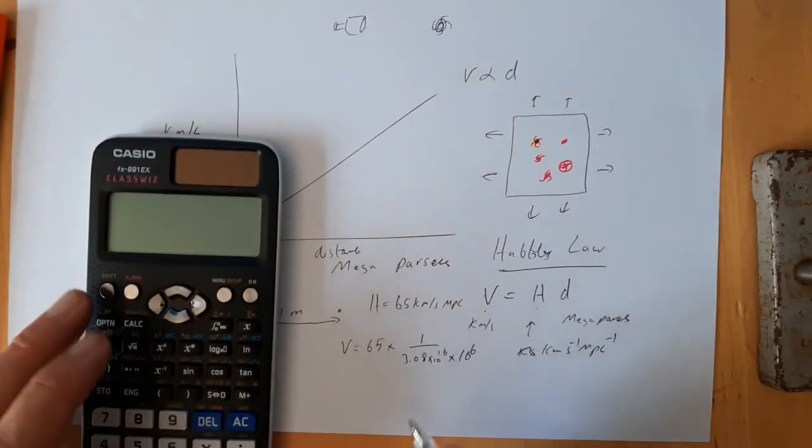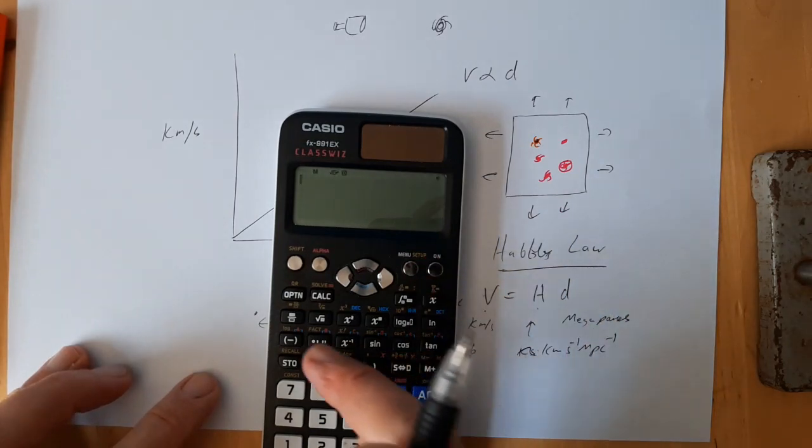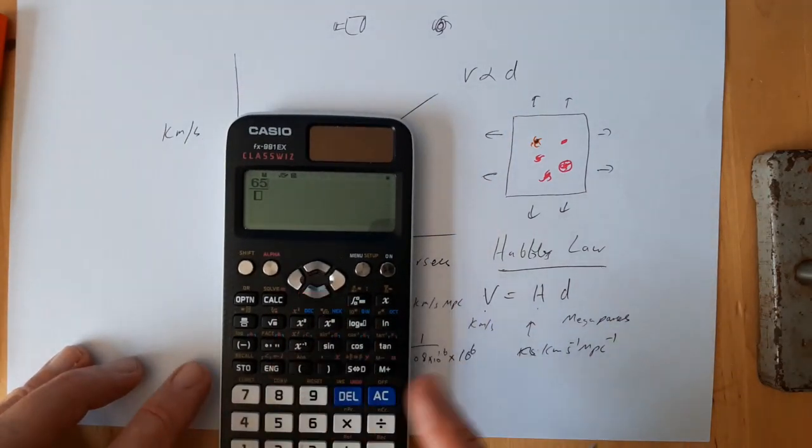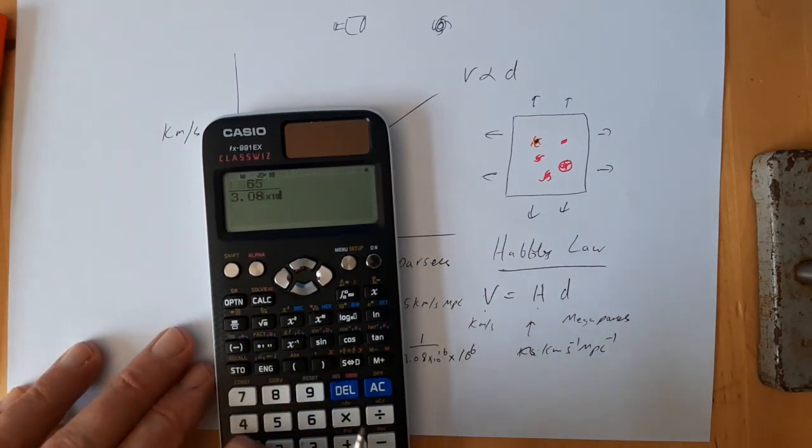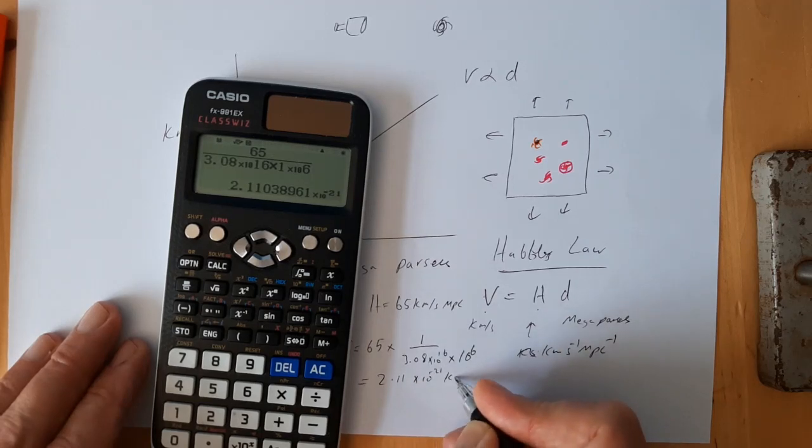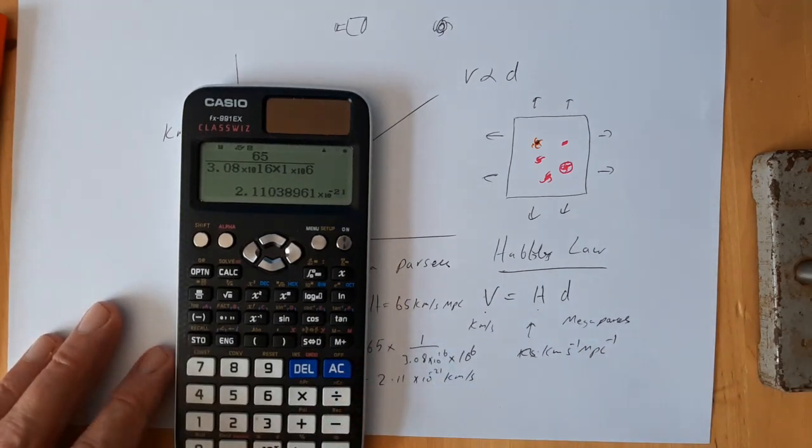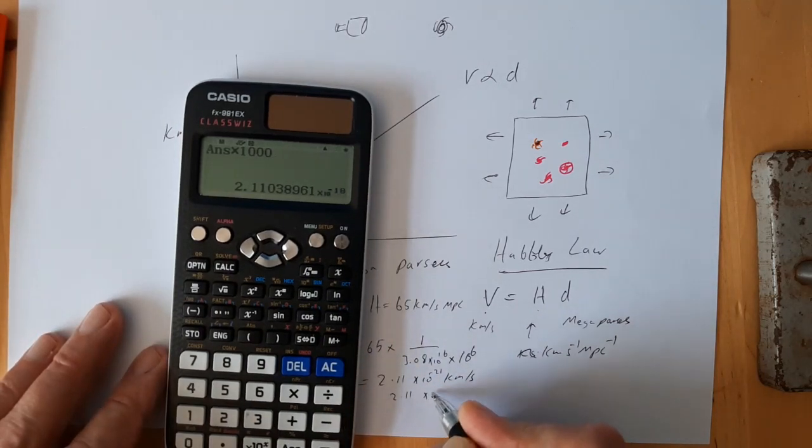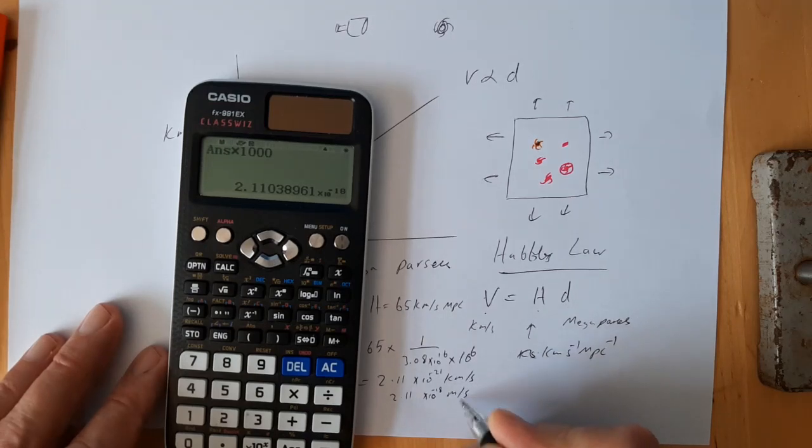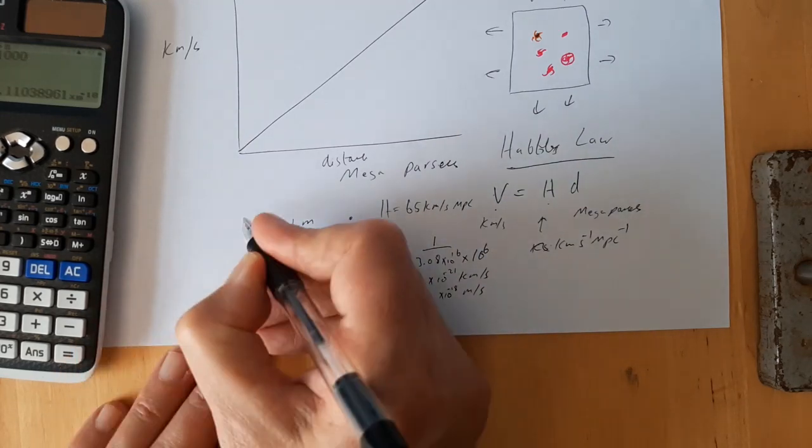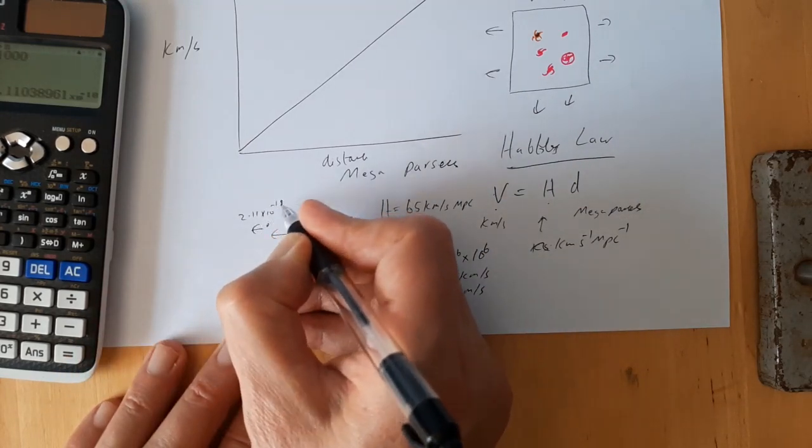Assuming you've had a go, you can now check my working. So the velocity is going to be 65 on the top, and then on the bottom we've got 3.08 exp 16 times 1 exp 6. So they're only moving apart at 2.11 times 10 to the minus 21 kilometers per second. Obviously it'd be faster in meters per second—it'd be a thousand times faster. So they're moving apart at 2.11 times 10 to the minus 18 meters per second. So we now know that our universe contains two points, and if that one's stationary, that one's moving away at 2.11 times 10 to the minus 18 meters per second.